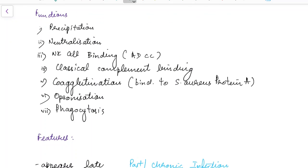Now let us see about the functions of IgG antibody. IgG antibody is involved in precipitation, neutralization, NK cell binding, classical complement binding, coagglutination (that is, it binds to staphylococcus aureus protein A), opsonization, and phagocytosis.